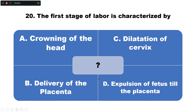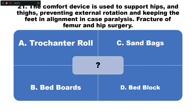Question number twenty: The first stage of labor is characterized by — option A: crowning of the head, B: delivery of the placenta, C: dilatation of the cervix, D: expulsion of the fetus till the placenta. The correct answer is option C — dilatation of the cervix is the main characteristic feature of the first stage of labor.